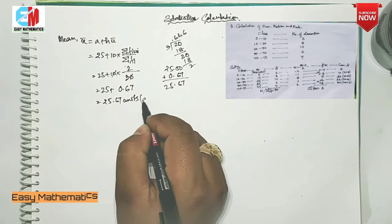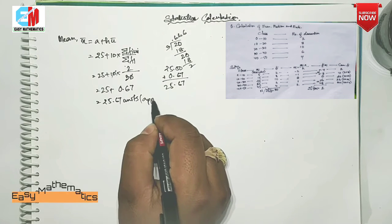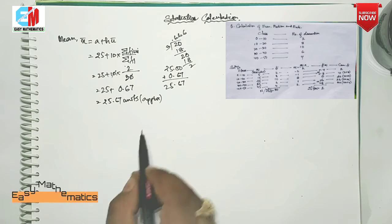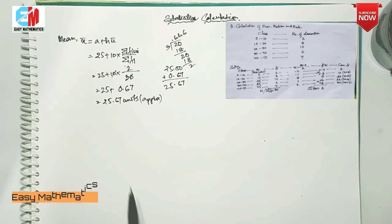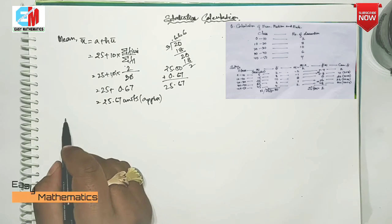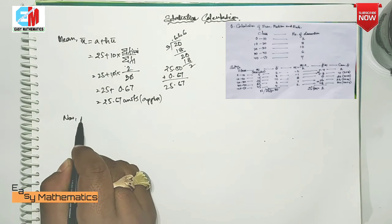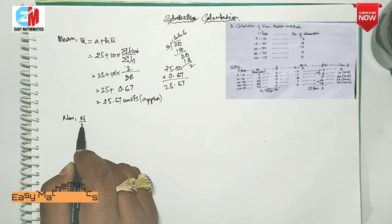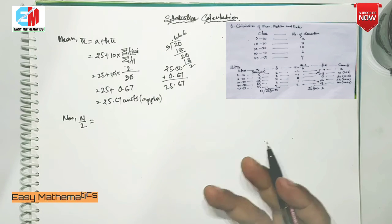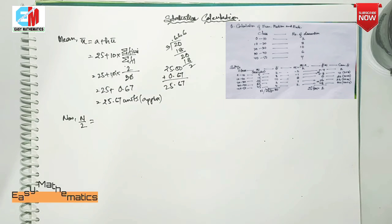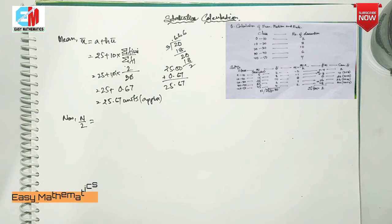The first is the number of units. Now the first is the median. The median formula is: L plus N by 2 minus C by F into h.